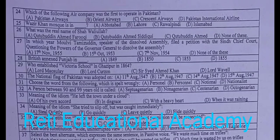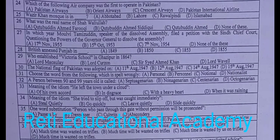Question number twenty-five: Wazir Khan Mosque is in — A. Abbottabad, B. Lahore, C. Rawalpindi, D. Islamabad. The correct answer is B, Lahore. Question number twenty-six: What was the real name of Shah Waliullah? A. Qutubuddin Ahmed Faruqi, B. Qutubuddin Ahmed Siddiqui, C. Qutubuddin Ahmed, D. None of these. The correct answer is C, Qutubuddin Ahmed. Question number twenty-seven: In which year did Maulvi Tamizuddin, Speaker of the dissolved assembly, file a petition with the Sindh Chief Court questioning the powers of the Governor General to dissolve the assembly? A. 17th November 1955, B. 15th October 1953, C. 7th November 1954, D. None of these. The correct answer is C, 7th November 1954.